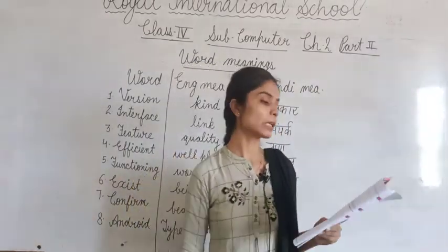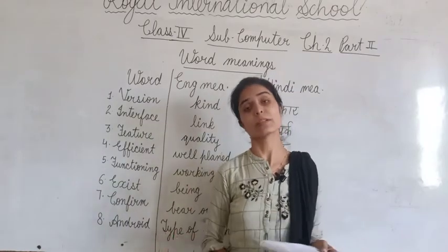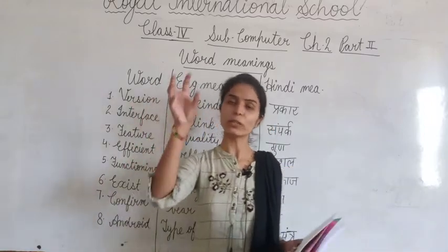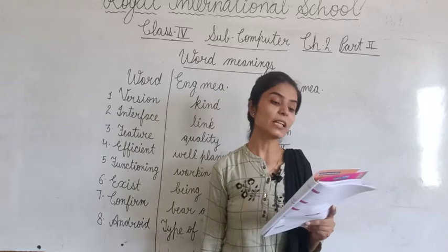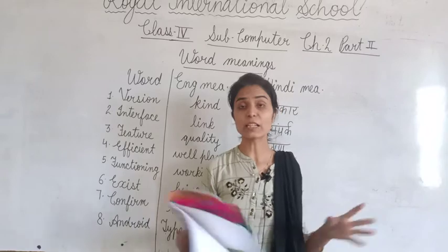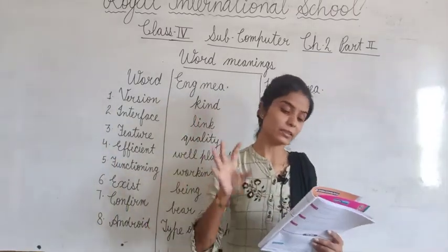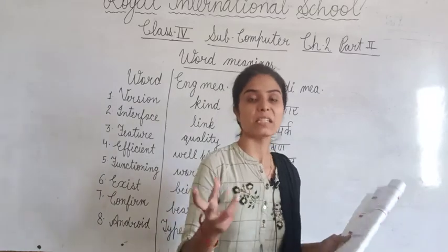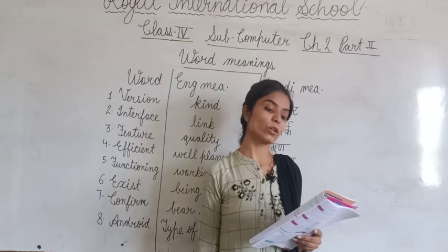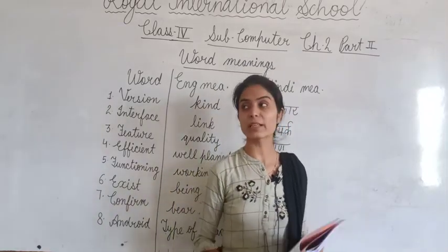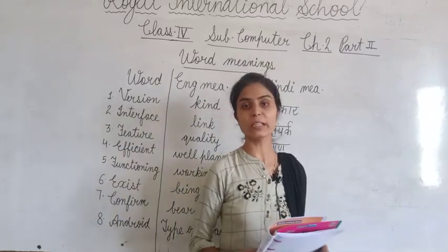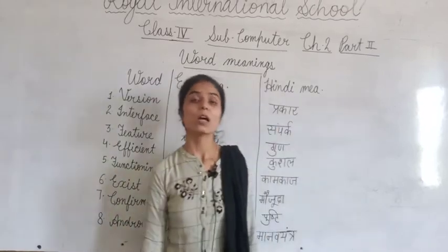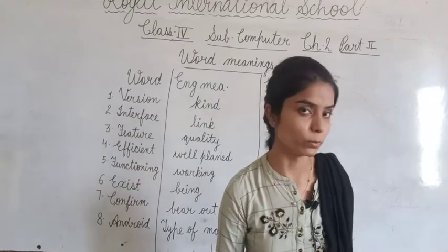This chapter is now complete. Key points: MS Windows operating system has many flavors called versions. A folder within a folder is called a subfolder. A file is a collection of data stored on a storage device such as a hard disk. A folder is a place to store one or more files. Android is an operating system for touch screen devices. In our next video we will do the book exercise of this chapter. Till then, stay safe, stay home.